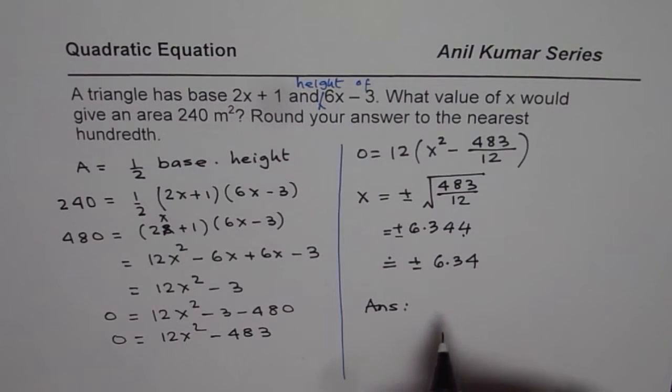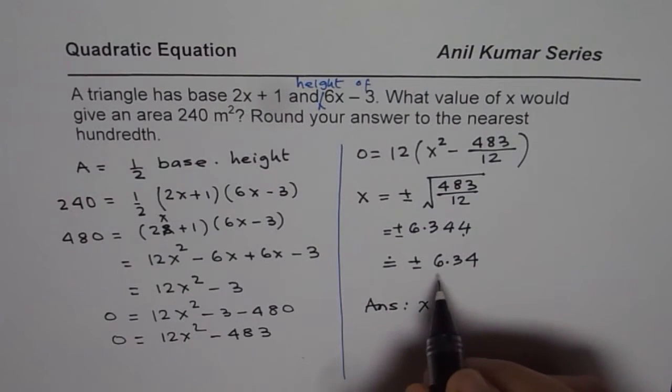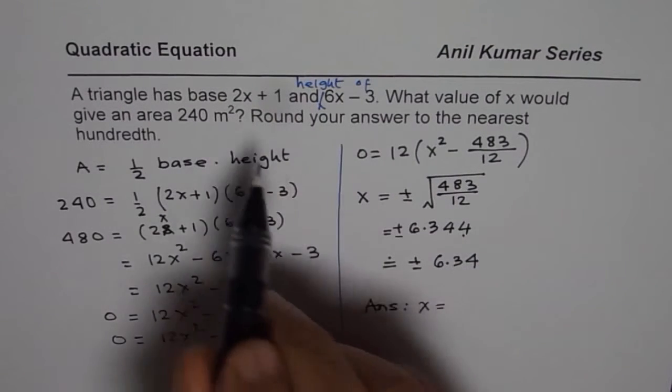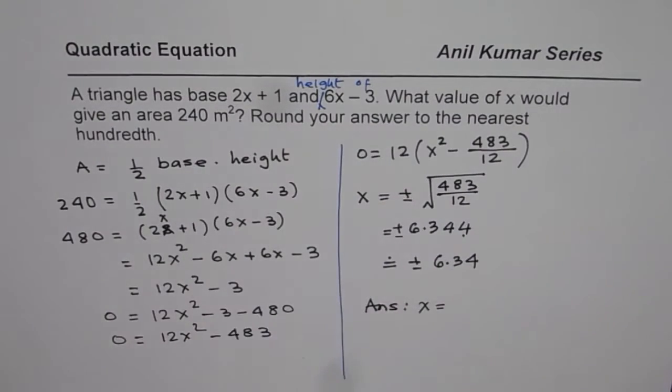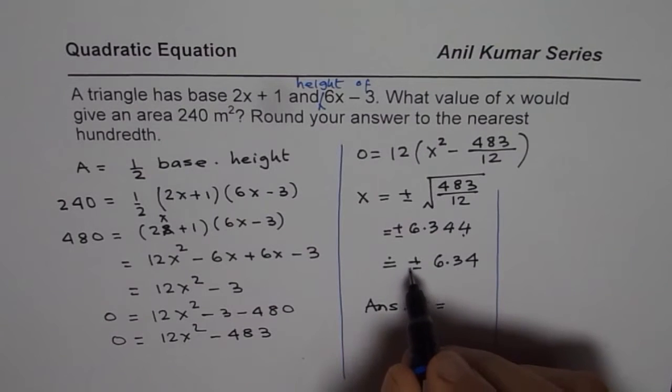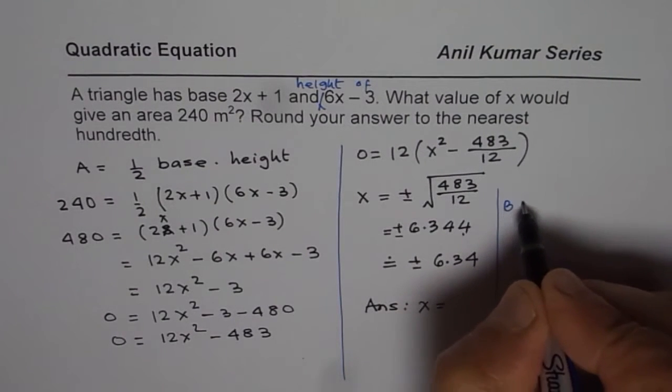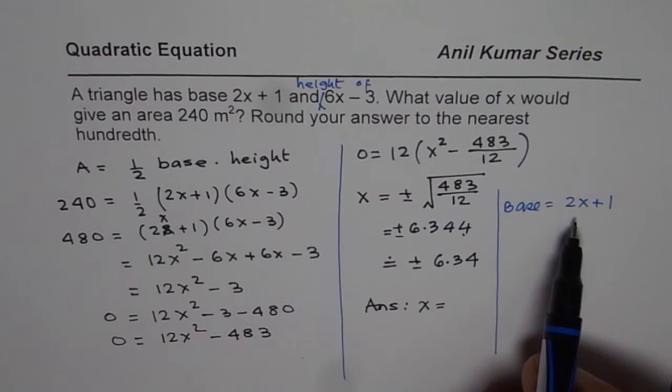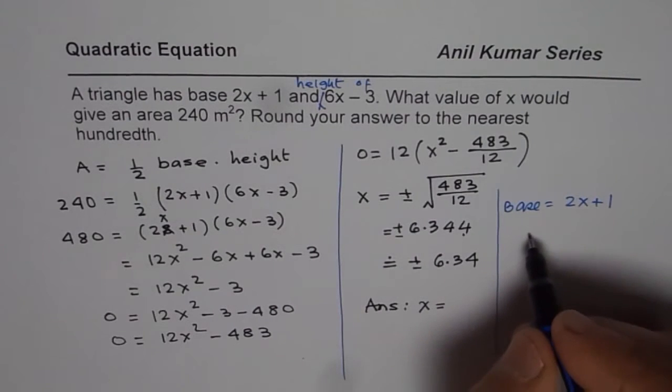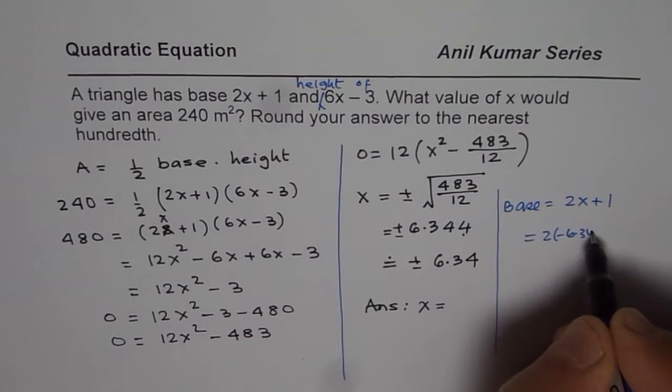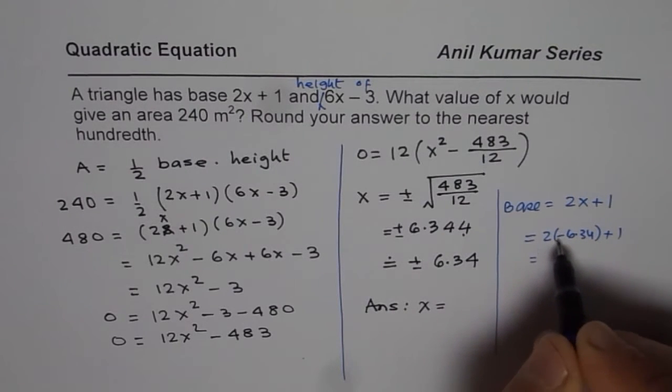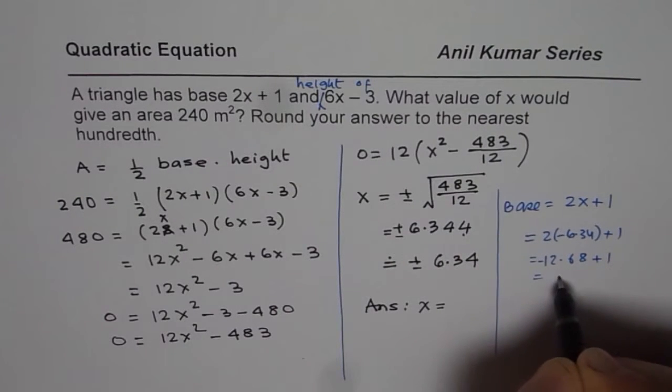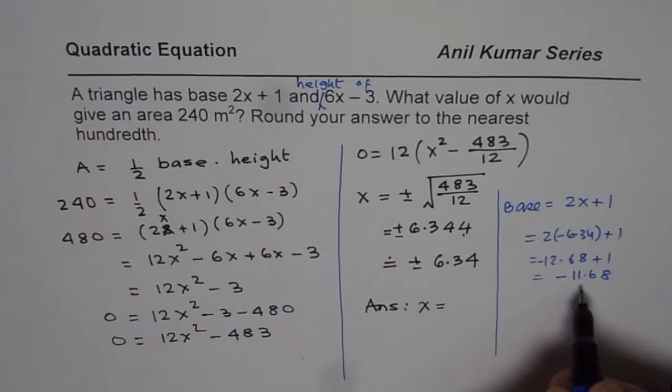Now, since the units are meter, it cannot be negative because if I write negative here, then one of these values will become negative. Let us check. We have two possible values, x is positive or negative. Base equals 2x plus 1. If I write minus 6 here, then what would be the base? It will be 2 times minus 6.34 plus 1, which is going to give us negative 11.68.